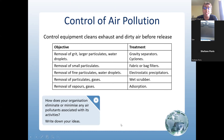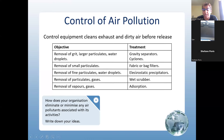I have seen a question on this — the question was: what is the best treatment for the removal of small particles? The answer would be fabric or bag filters. The Earth's atmosphere is a global system. Contaminants released can cause three levels of pollution: local, regional, and global.